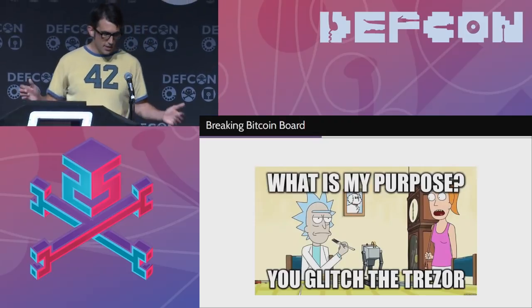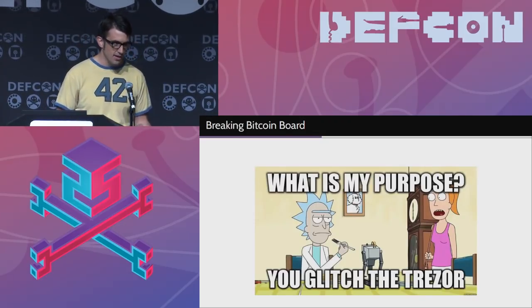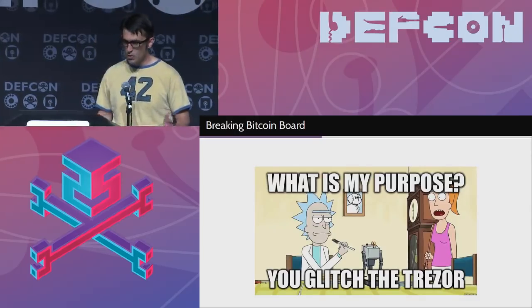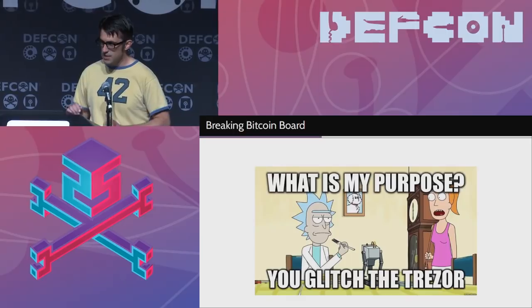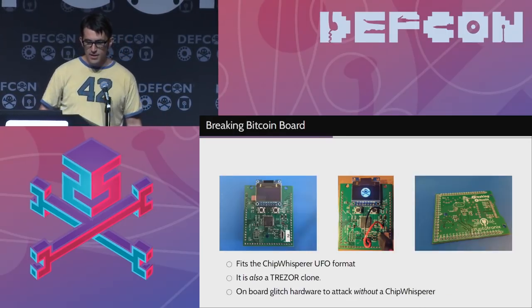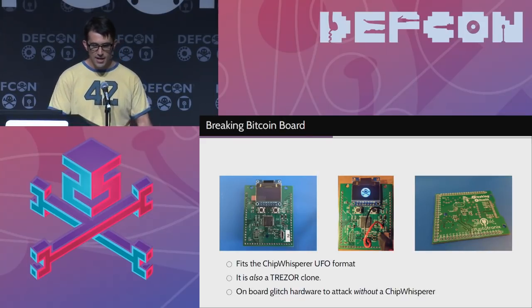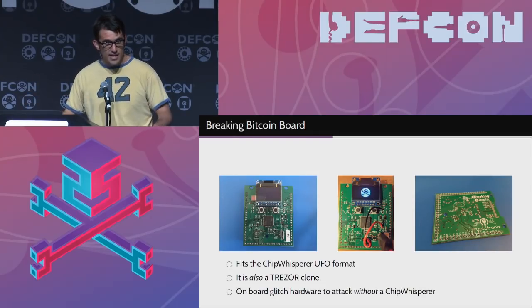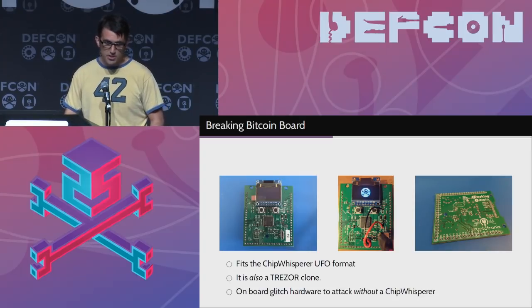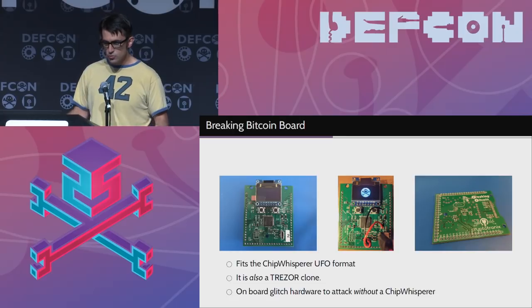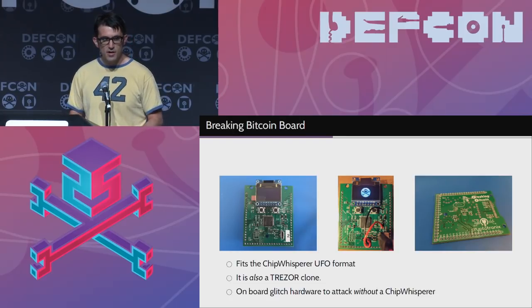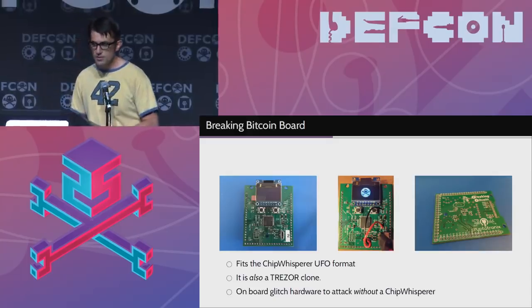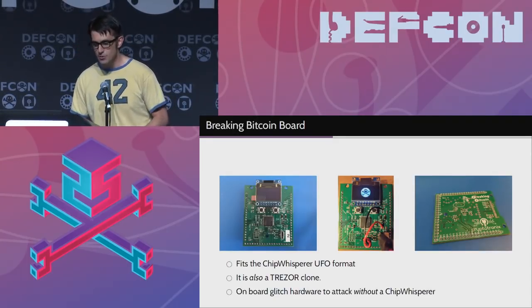We clearly needed something simpler. We couldn't go right for the main device, so we needed to start small and build up. We wanted a simple proof of concept to have confidence we could do the glitch attack. So we made a Trezor clone and we are releasing it — we have boards to hand out and all design files will be on the website. Completely open source hardware and firmware. You can make your own Trezor. It sits on top of the ChipWhisperer, which is why it has that form factor.